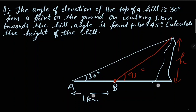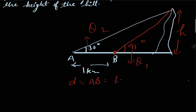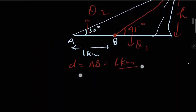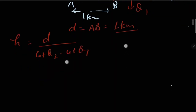The given values are: theta one and theta two for the two angles, and the distance d, which equals AB, is given as one kilometer. We will use the formula: height of hill = d divided by (cot theta two minus cot theta one).